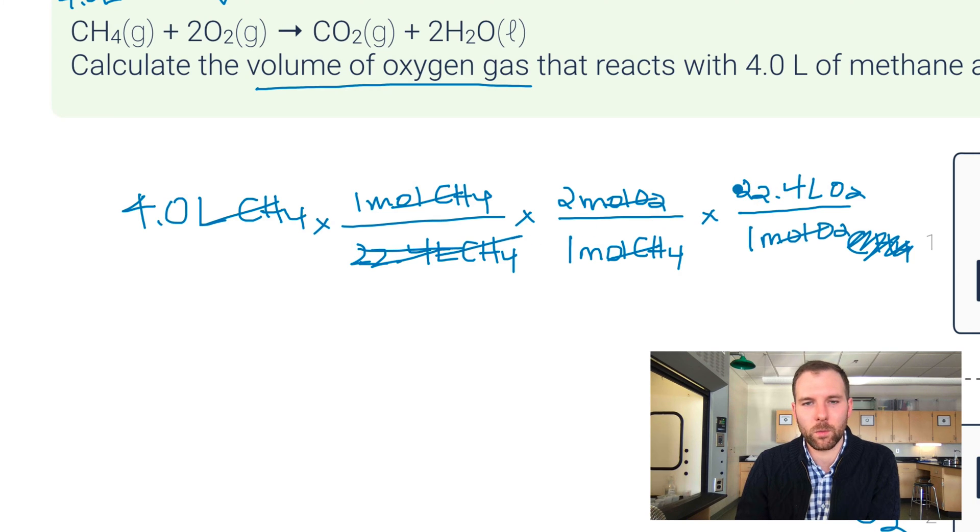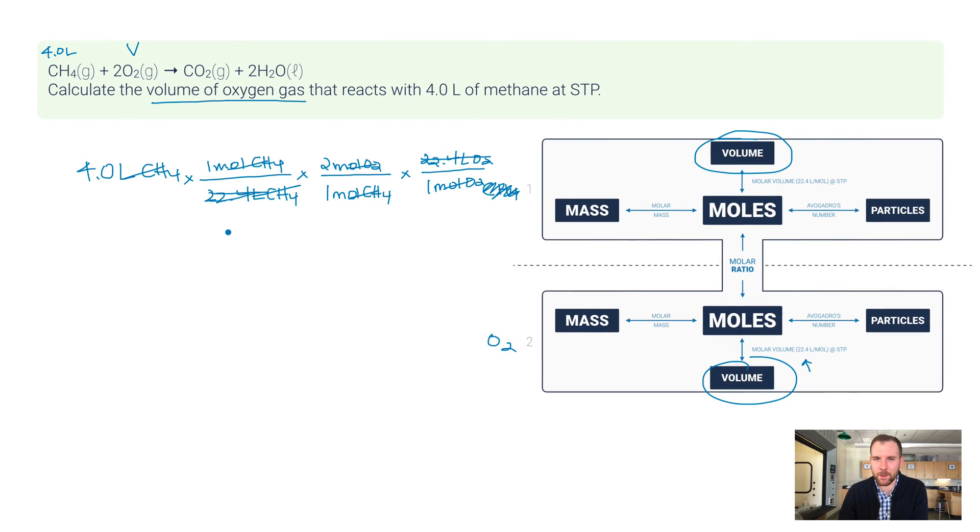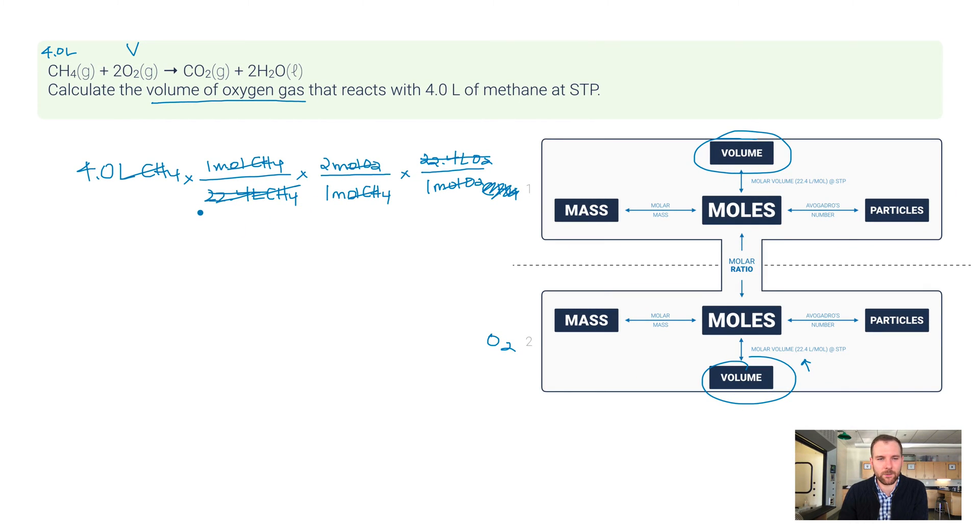We don't need to put in 22.4 liters on the top and the bottom because you're going to divide them and that's going to give you one. Essentially what we're doing is just 4.0 liters times 2 over 1, and that should give us 8. So 4.0 liters times 2 over 1 gives us 8.0 liters of O2. That's our final answer. I have two significant figures to match.